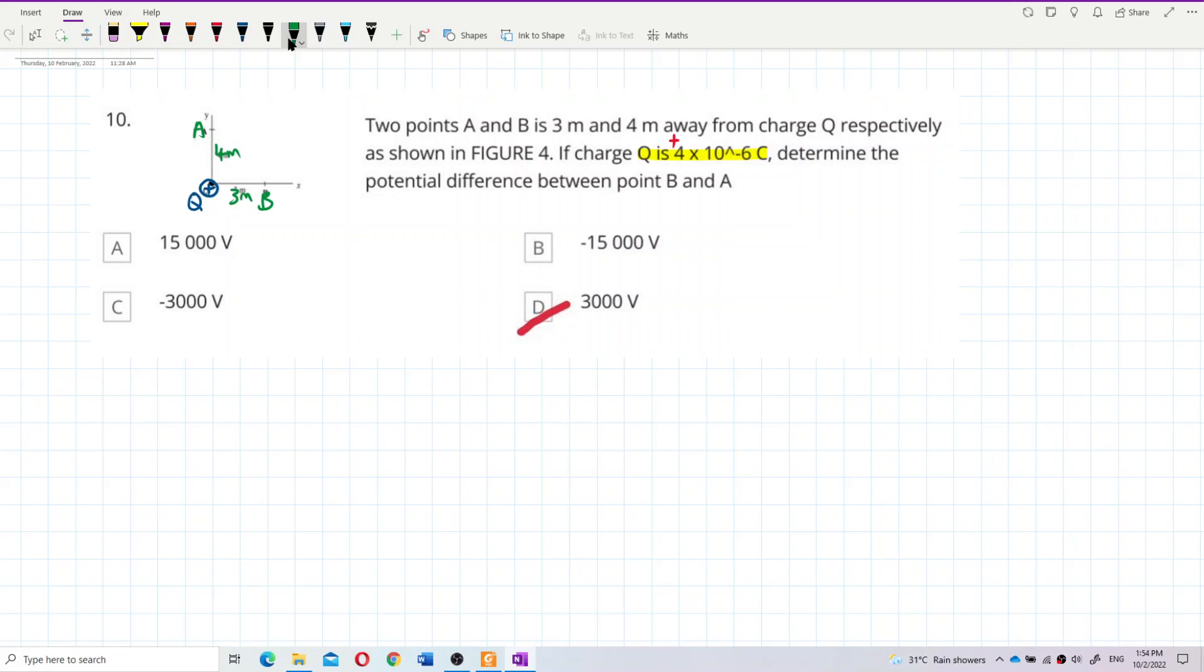So what's the potential difference between point B and point A, between these two points? The potential difference between point B and A, potential difference is delta V.